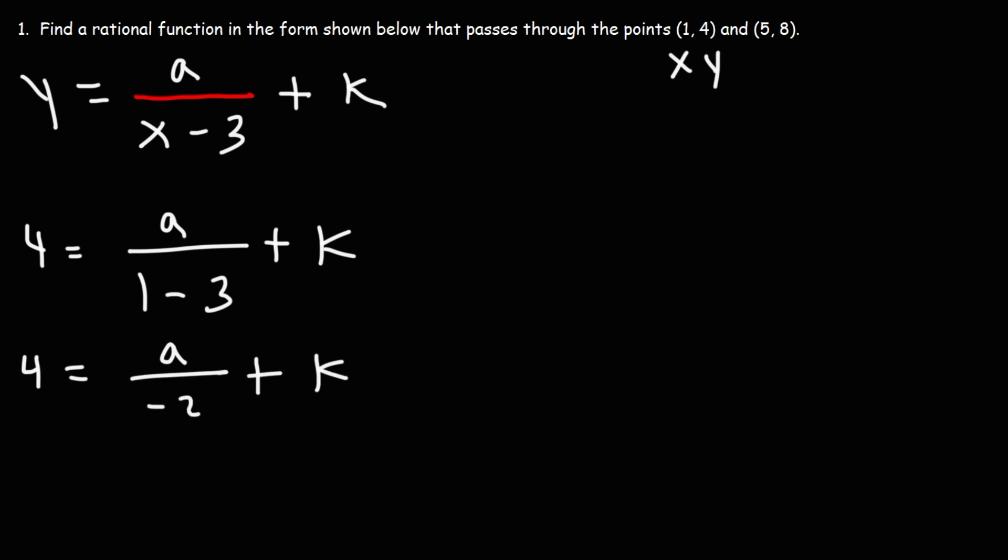Now let's get rid of the fraction by multiplying everything in this equation by negative 2. So first we have negative 2 times 4. That's going to give us negative 8. Now negative 2 times a over negative 2. The negative 2s will cancel giving us just a. And then negative 2 times k is negative 2k. So we'll save that equation for now.